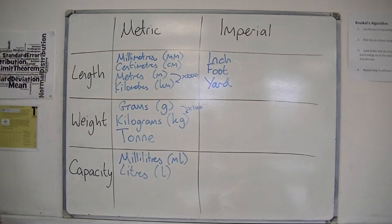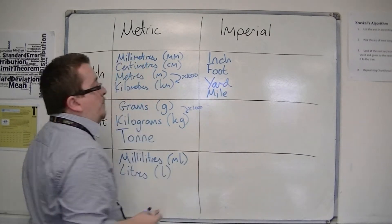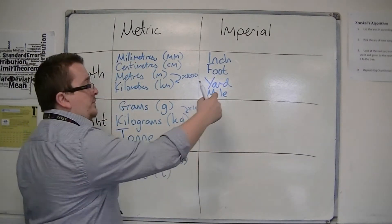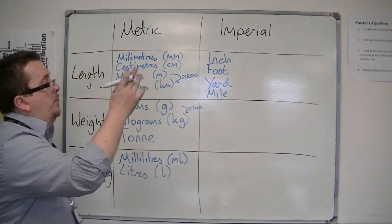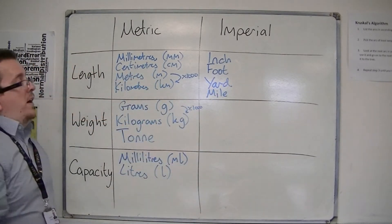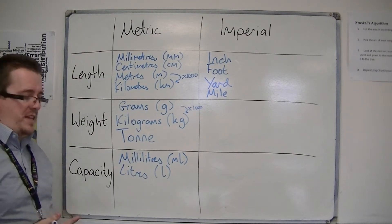And then there are 3 feet in a yard. So then you go on to a mile. But there are 1,760 yards in a mile.